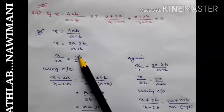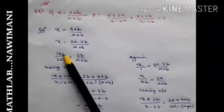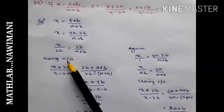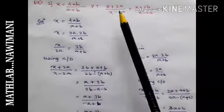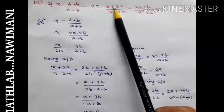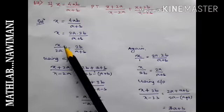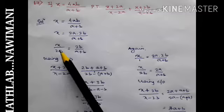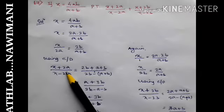Now this is in that proportion form a by b is equal to c by d. Then I will use componendo and dividendo. In the numerator there is plus, in the denominator there is minus. So x plus 2a and x minus 2a is equal to here also 2b plus a plus b.